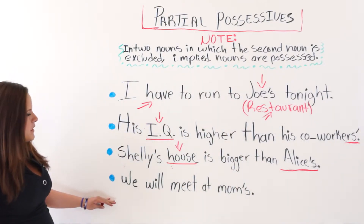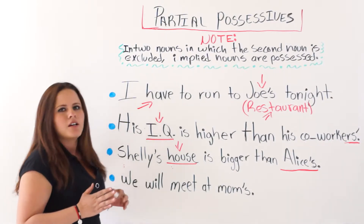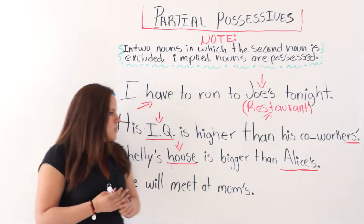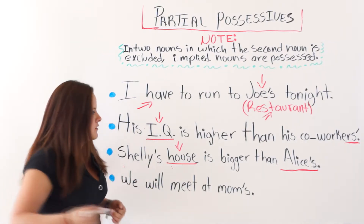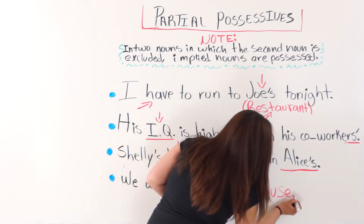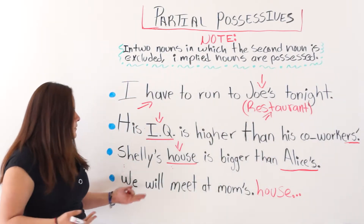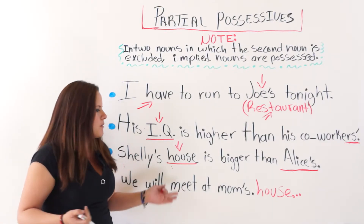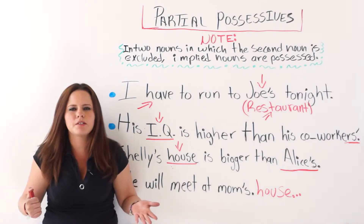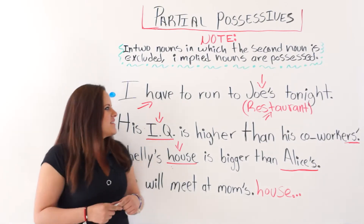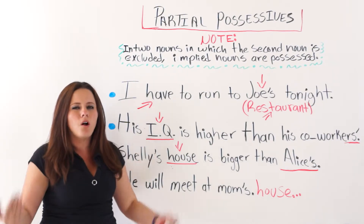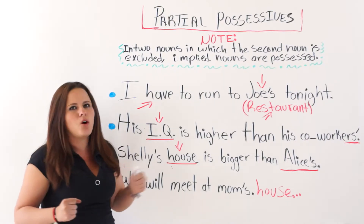The last example is: we will meet at mom's. If I tell all of my sisters, 'Hey, Liz, Jessie, we are going to meet at mom's at three' — which do you think will be the implied noun? At mom's house, probably. At mom's place, probably. You could imply many nouns: we will meet at mom's house, mom's restaurant, mom's bar, or even a cafe named mom's. The point of this lesson is for you to know that partial possessives are always used and an implied noun is always involved.